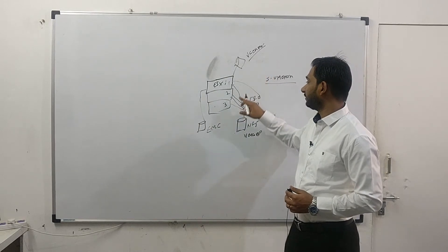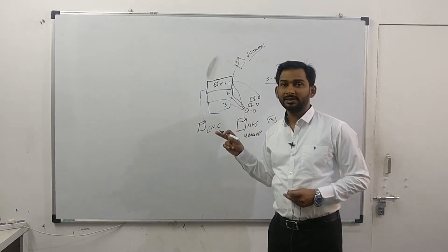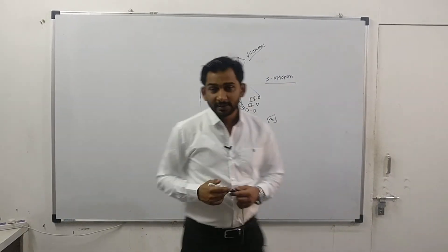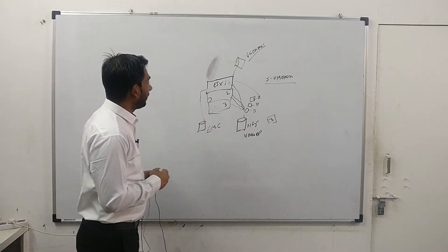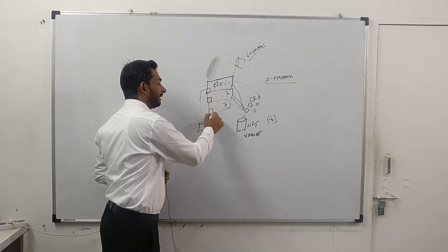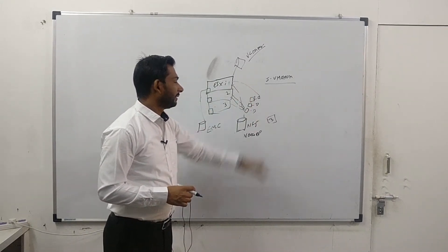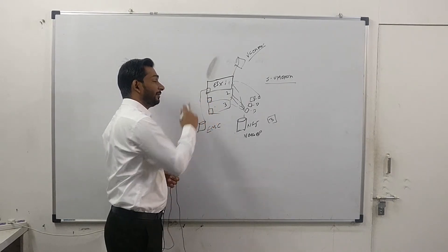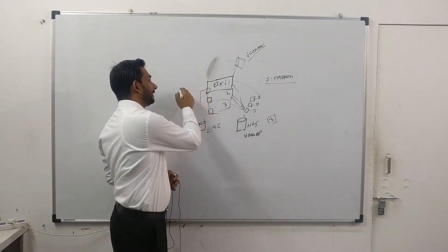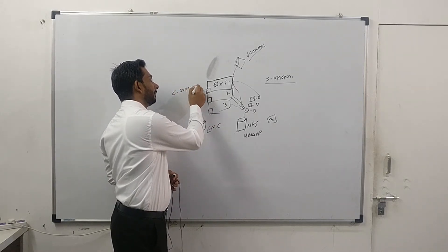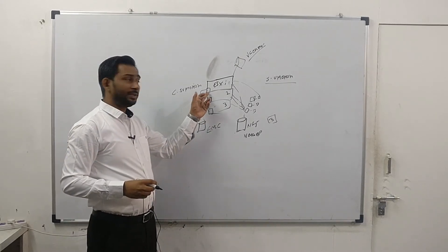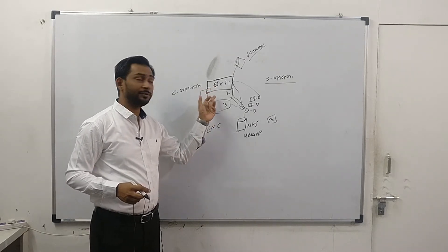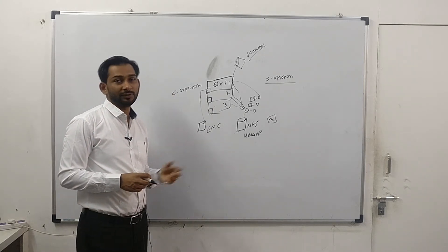If you have local storage — some organizations use only local storage on each ESXi host with no centralized or shared storage such as NFS or SAN — and you want to migrate a virtual machine from one ESXi host to another, you need to shut down the virtual machine first. That is called cold storage vMotion. You shut down the VM, use the migration wizard, and migrate both the storage and the virtual machine from one ESXi host to another.